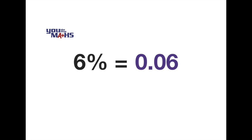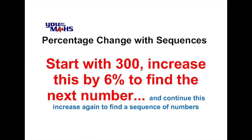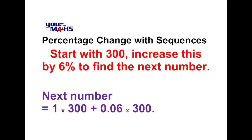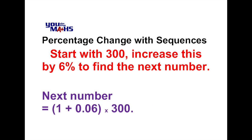Going back to our original problem: if we're going to increase 300 by 6%, we take the basic amount of 300 and add to it 6% of 300, or writing that as a decimal, 0.06 times 300. After we've done that, we can see from an algebra point of view that we can factorise the 300 out, and we're left with in brackets 1 plus 0.06.